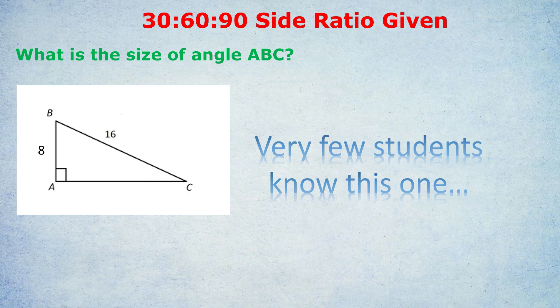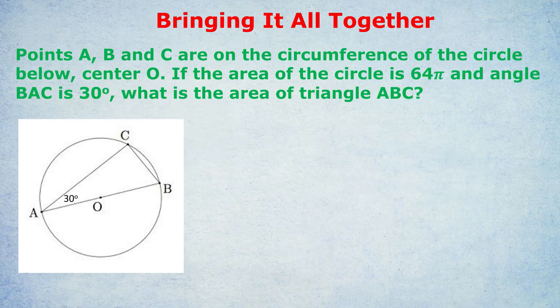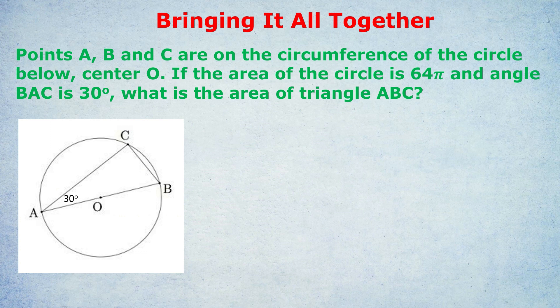Now for the culmination, the main event. This is the final question I'm going to do because the GMAT and GRE like to mix things up and mix in other topics. They usually won't just give you a simple triangle and say work it out. They like to mix things up, often involving circles. So if you want, pause the video and try this entire question yourself because it's a biggie. Points A, B, and C are on the circumference of the circle below, center O. If the area of the circle is 64π and the angle BAC is 30 degrees as shown, what is the area of triangle ABC?